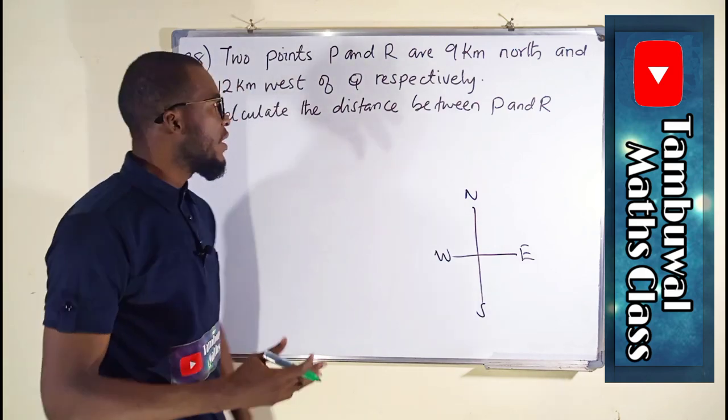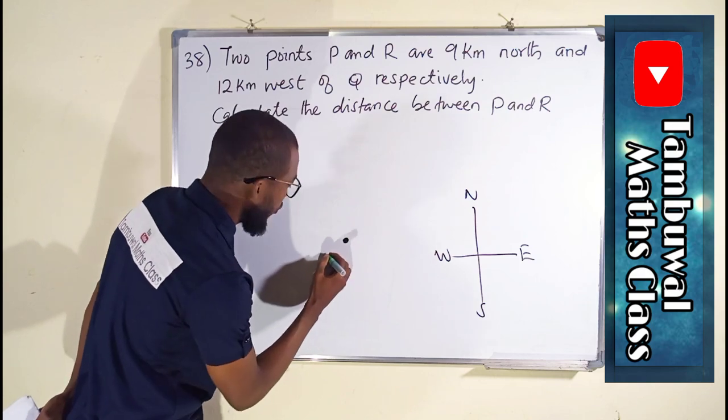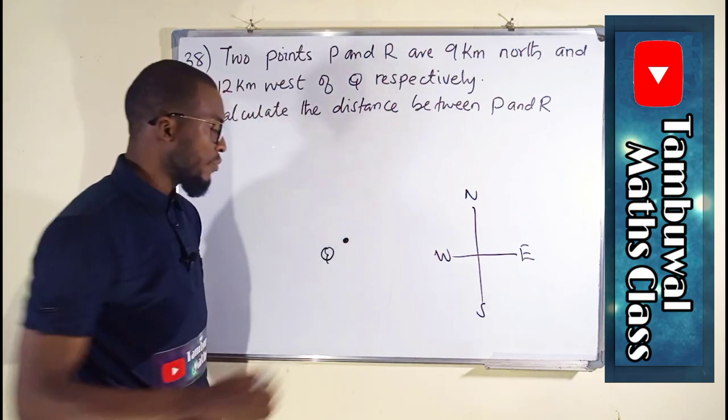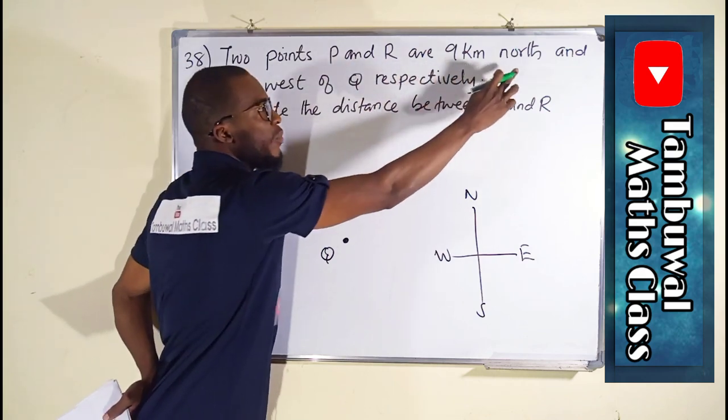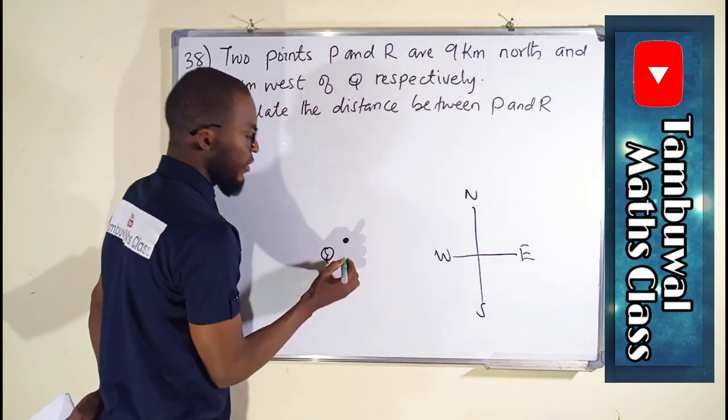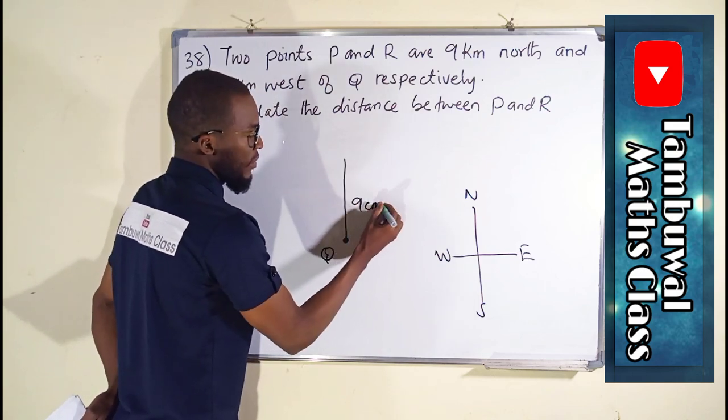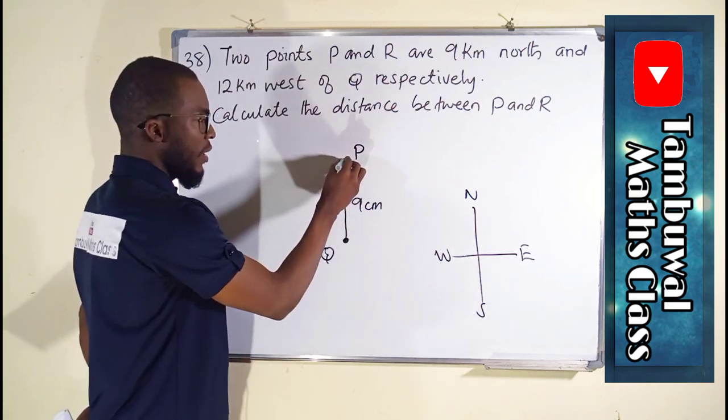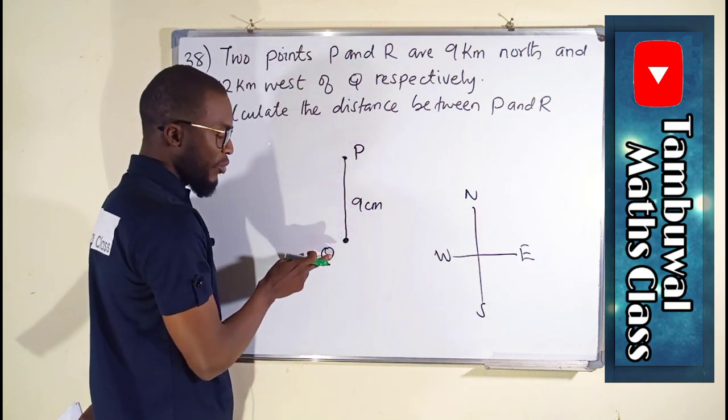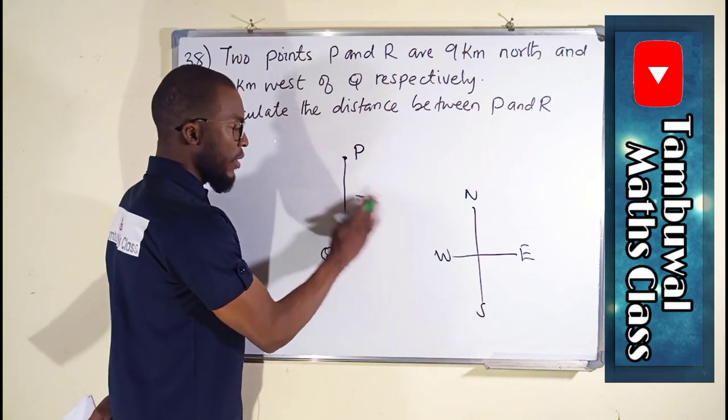So what this question is saying here: if this is point Q, P is 9 km north of this Q. So this is north of Q, 9 km, and this is our P at this point. The distance between Q to P is 9 km.